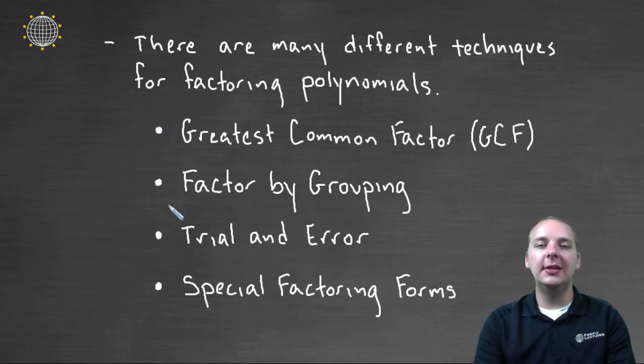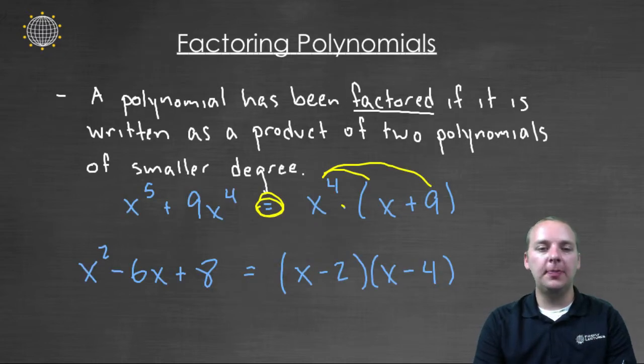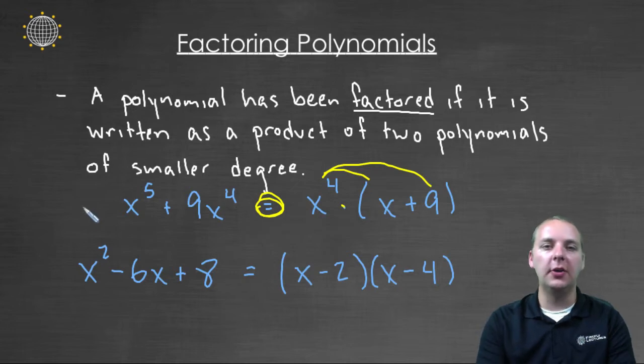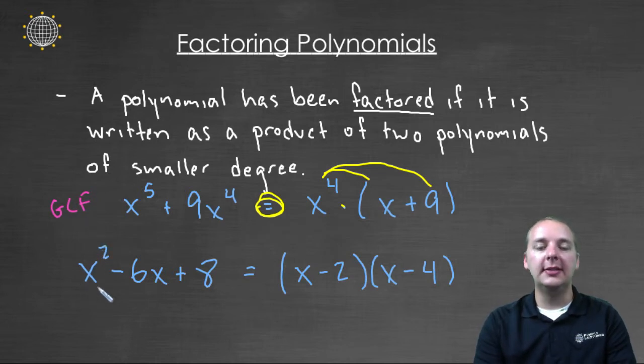All these are used in different scenarios. Without going into detail, this probably won't make sense right now, but if you come back and watch this later it will. This first one was factored using GCF. But the second example was totally different—it wasn't GCF, it was trial and error.